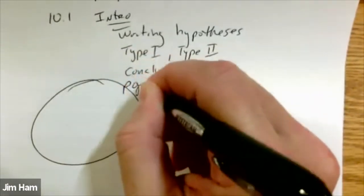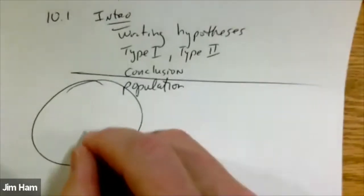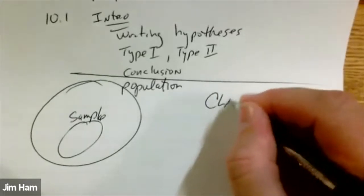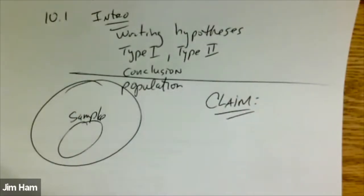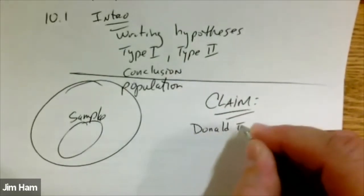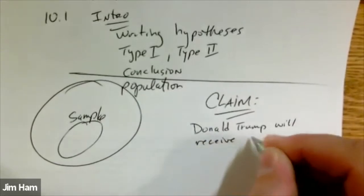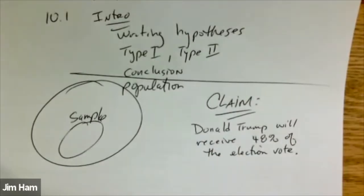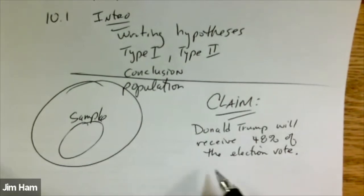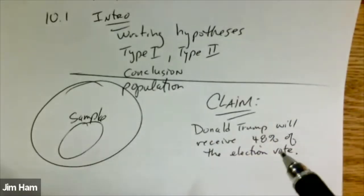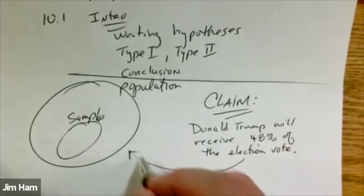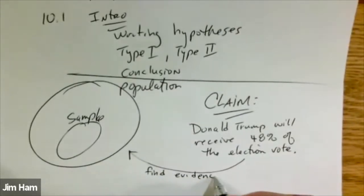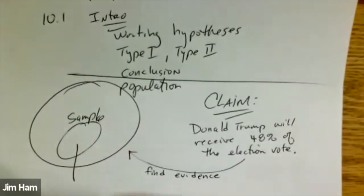We start with a population and we take a sample. Someone starts off with a claim — maybe the claim is that Donald Trump will receive 48% of the election vote. The only way that we can confirm or deny that result is to go find some evidence. The evidence involves going and taking a random sample from the population, and then calculating the sample proportion from that.